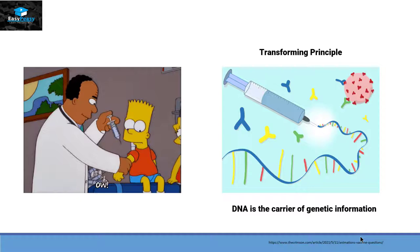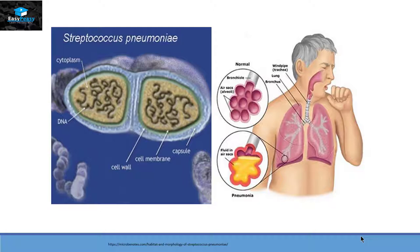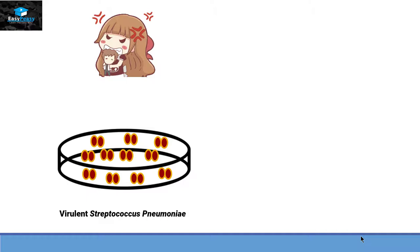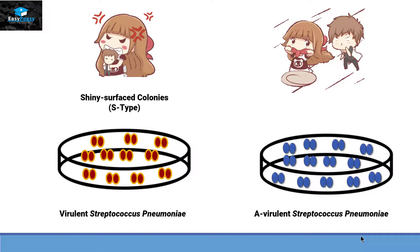He was working on Streptococcus pneumoniae, which is present in two different forms. One form is the virulent type, as it has a capsule around it which is responsible for blood poisoning. They make shiny surface colonies, that's why they are also called S-type bacteria. On the other hand, we have avirulent Streptococcus pneumoniae. These bacteria don't have a capsule and that's why they make rough colonies — they are also called R-type bacteria.